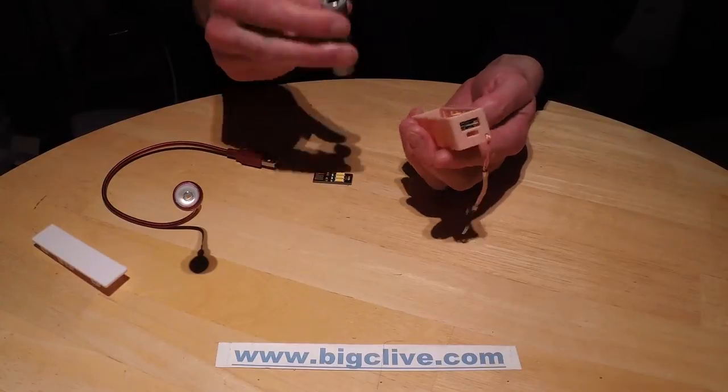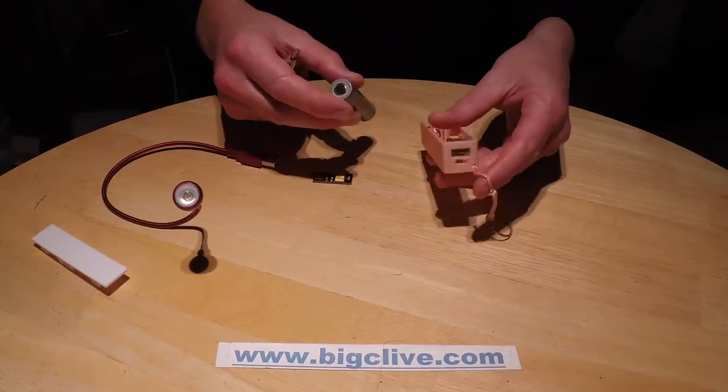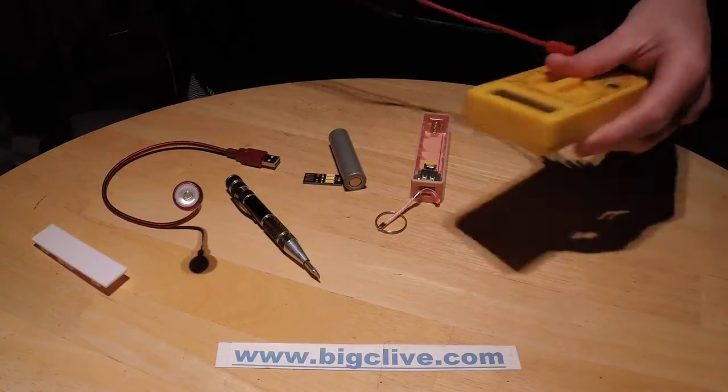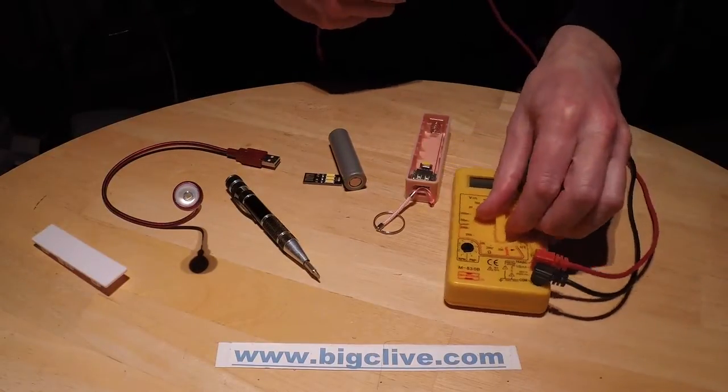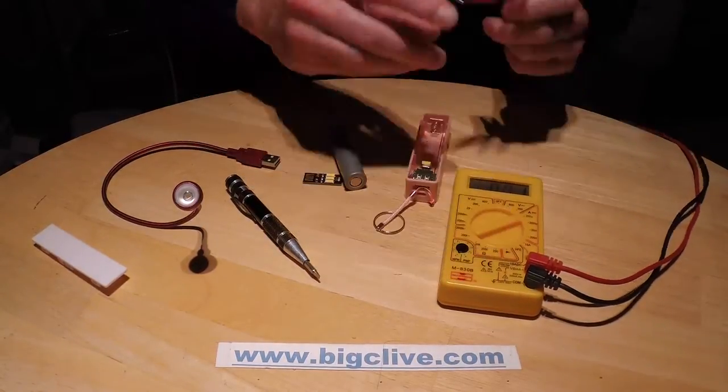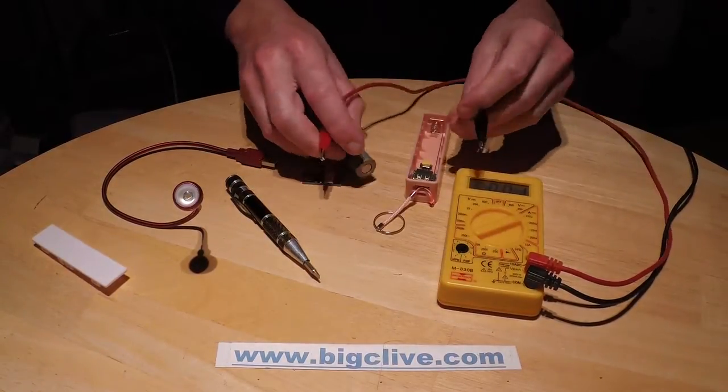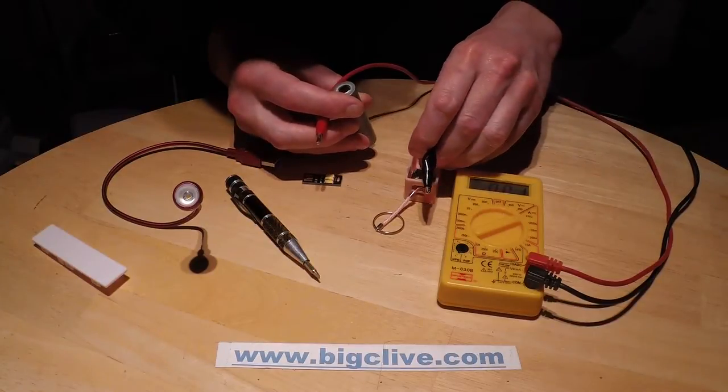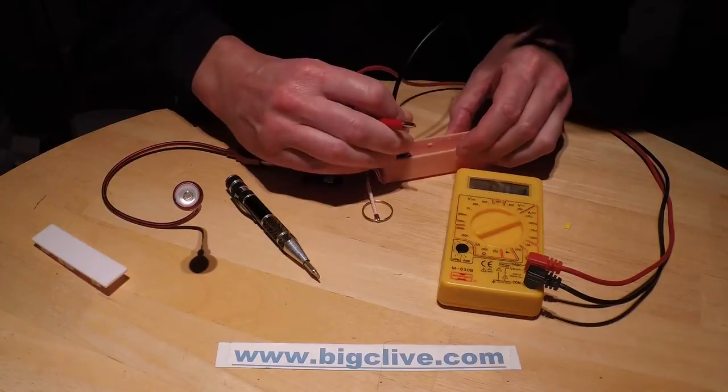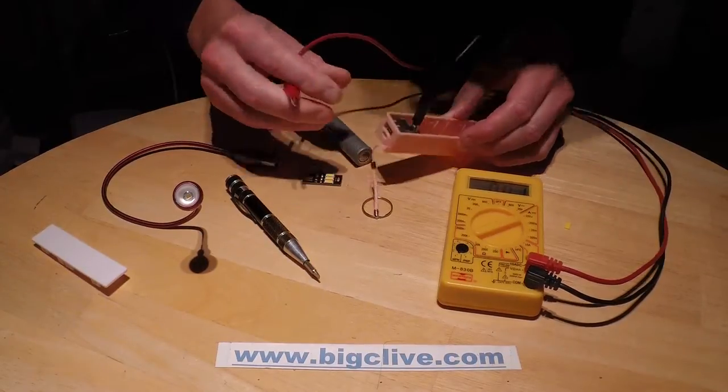But it also let me put a meter in series to test it. So, using this cheapo meter because my big industrial Fluke meter doesn't actually go to a low enough current. Let's stick this here and measure the quiescent current.